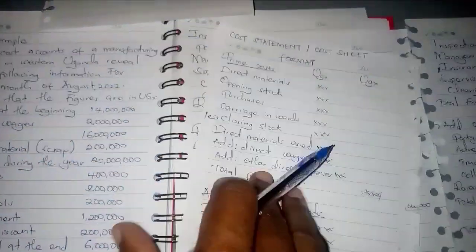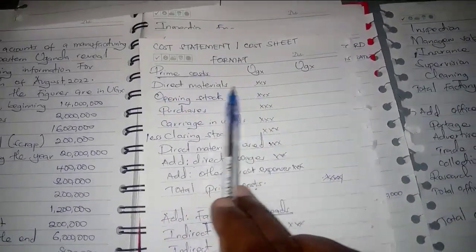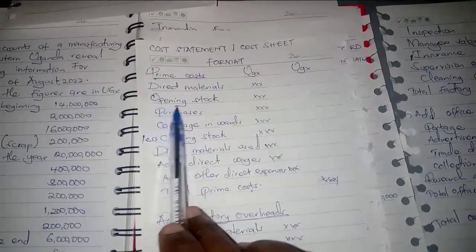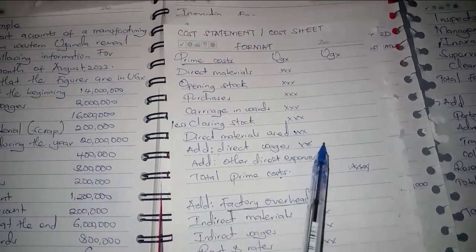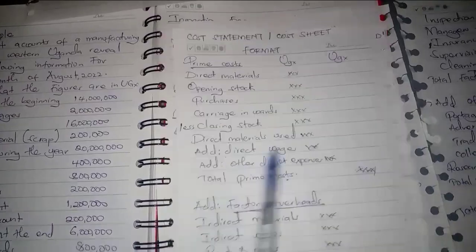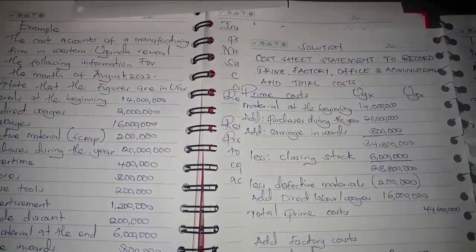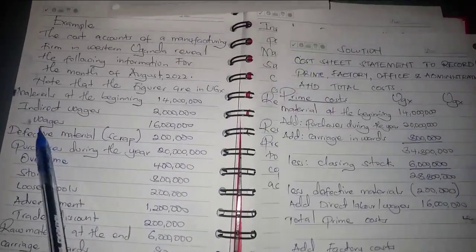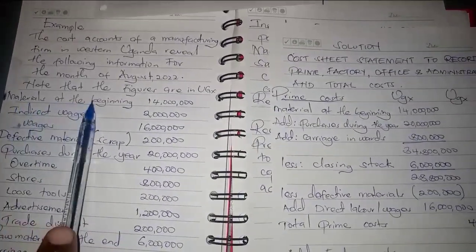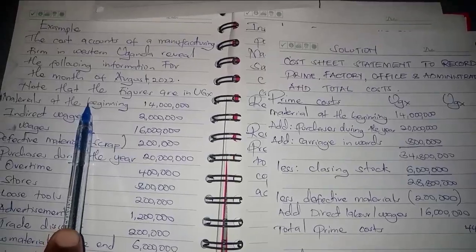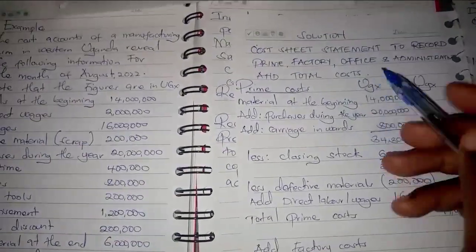According to the formatting, the prime costs we are supposed to have are: direct materials — opening stock, purchases, carriage inwards, closing stock — then direct wages and other direct expenses. We have materials at the beginning of the period, which is a prime cost, so we write it here.